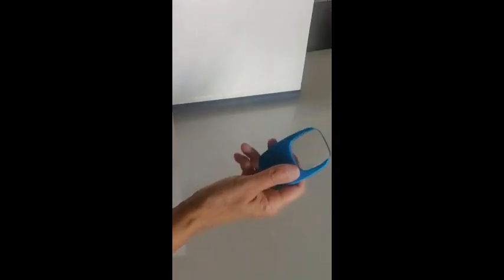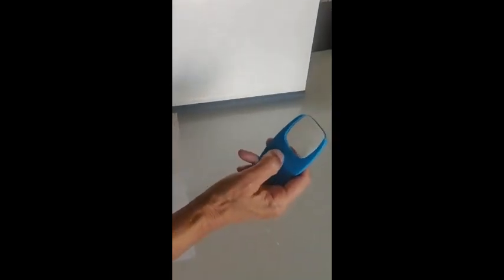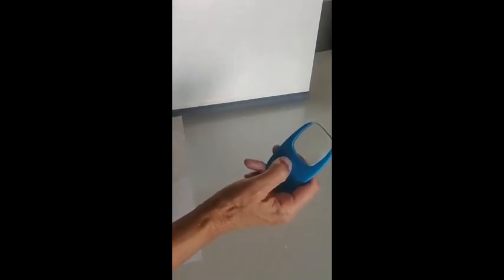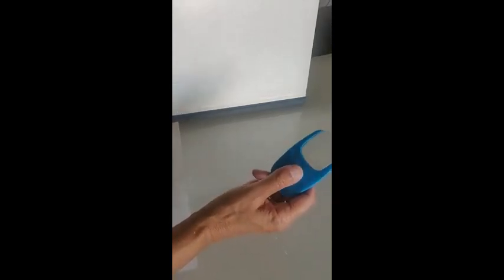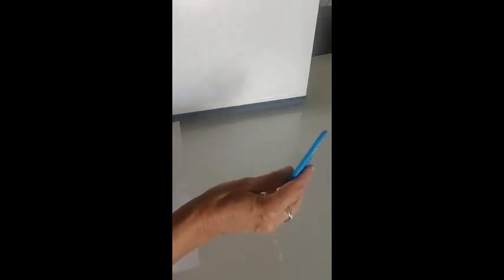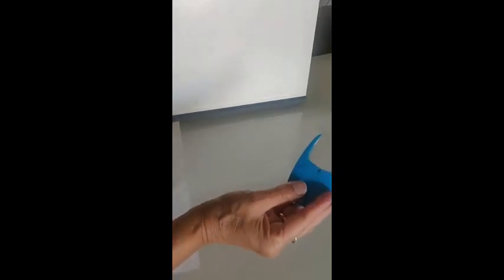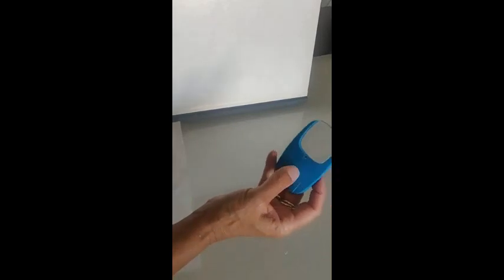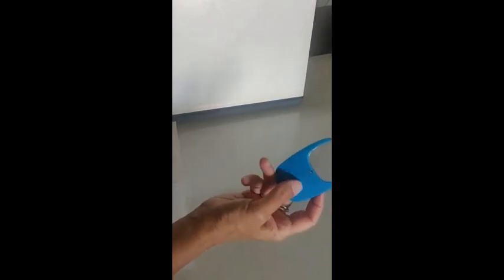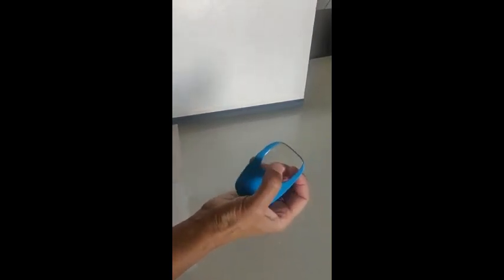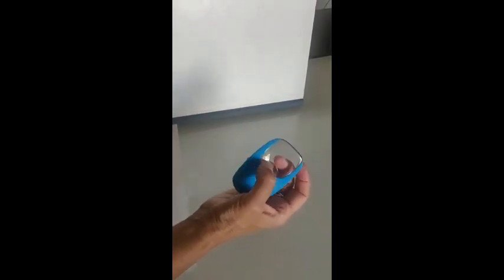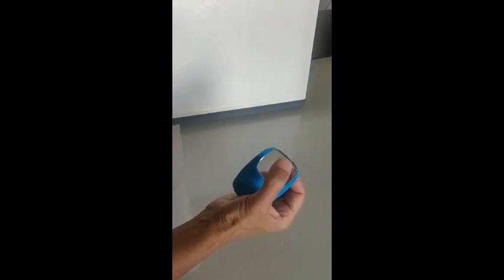Hi guys, I'm going to do the demo I did in class that you can easily do also at home. Here I have a magnifying glass that I got at the dollar store. It's a converging lens — that is, it's a convex lens.